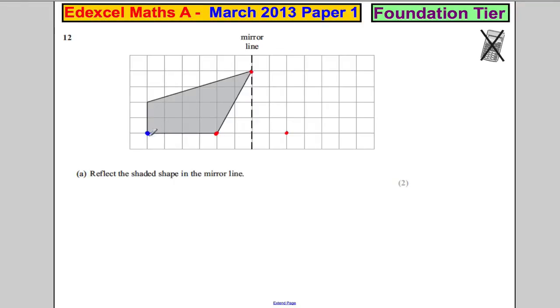This point here I'll do in a different color just to make it obvious. That's one, two, three, four, five, six squares, so I'm going to go one, two, three, four, five, six squares. I'll go for a different color here, just for this one: one, two, three, four, five, six.